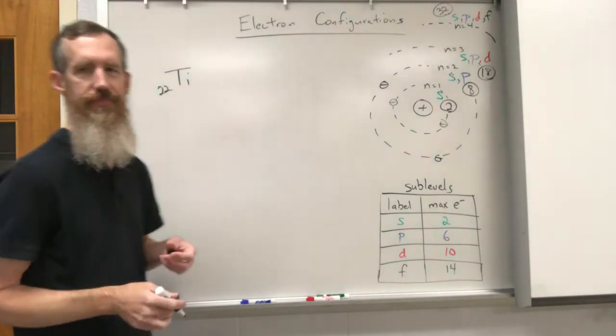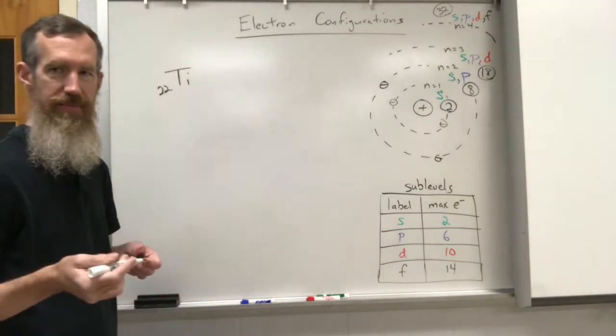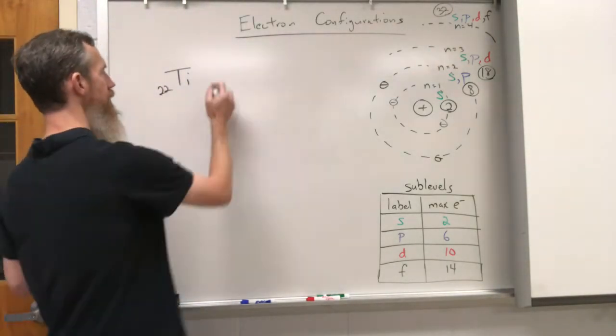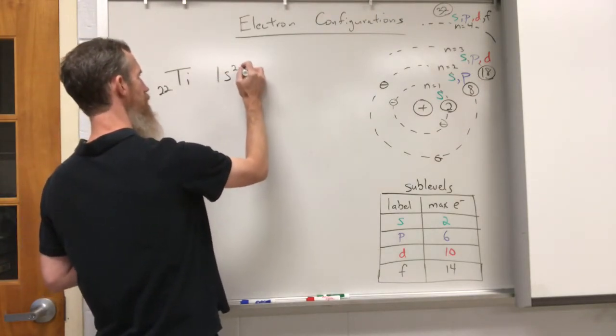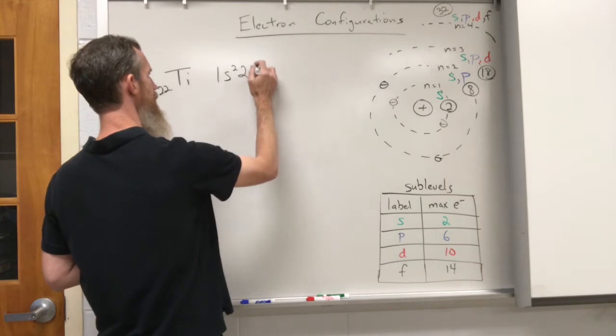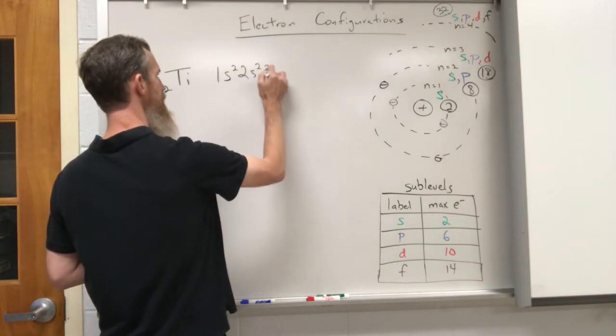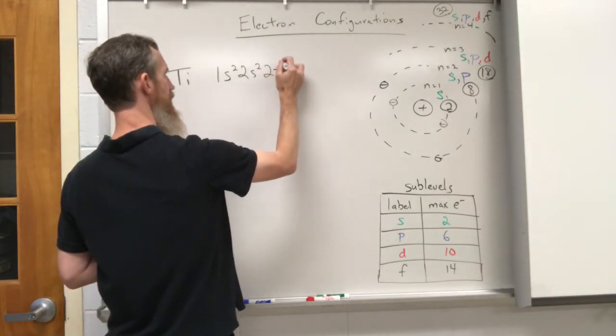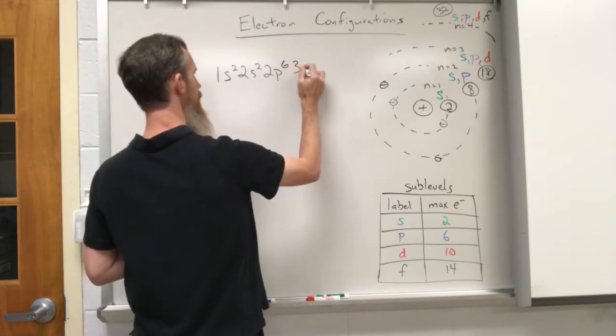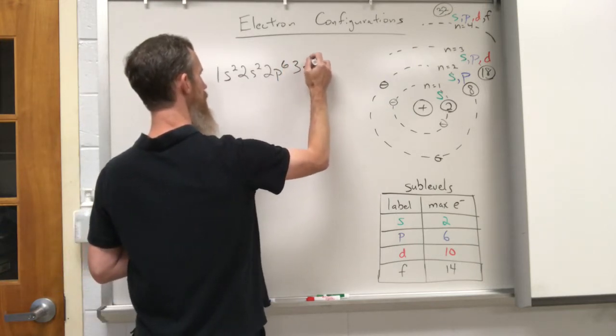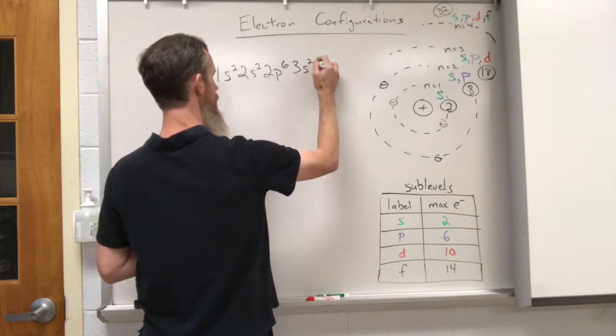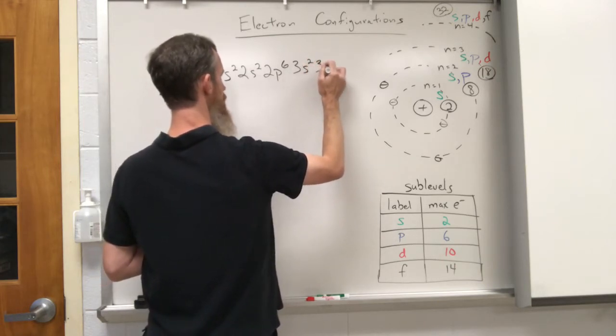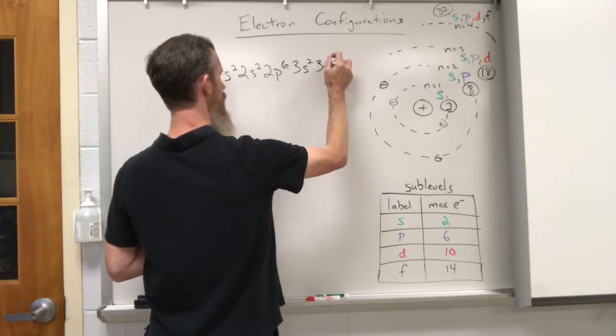22 electrons and we're gonna map them out. The first energy level s sublevel holds 2. The second energy level has an s sublevel holds 2, the second energy level has a p sublevel holds 6. Third energy level has an s sublevel holds 2, third energy level has a p sublevel holds 6.